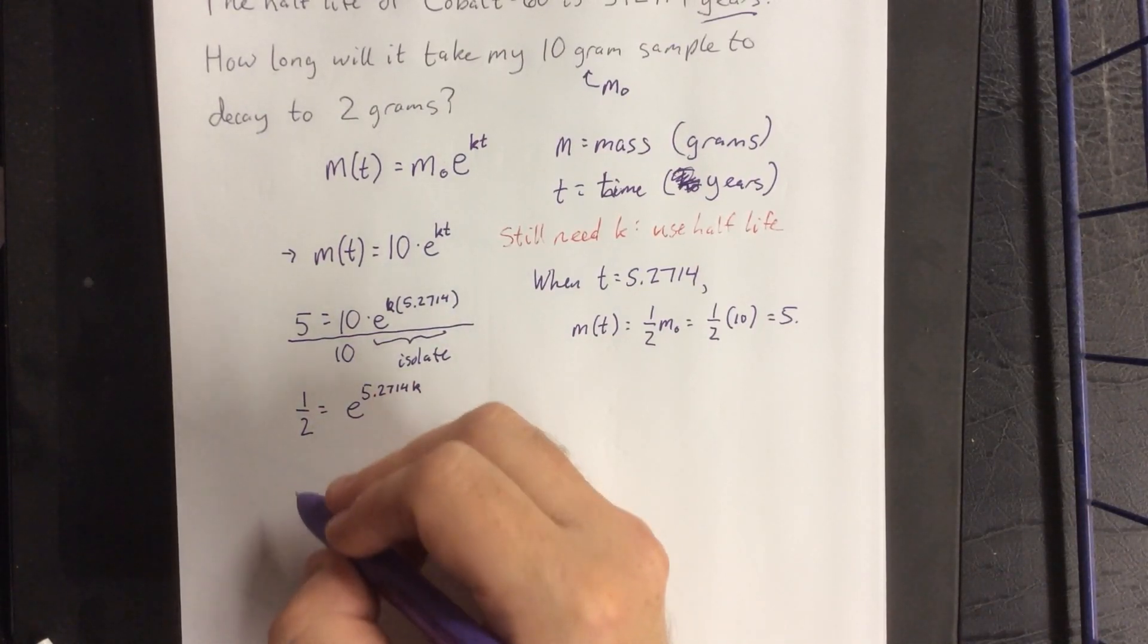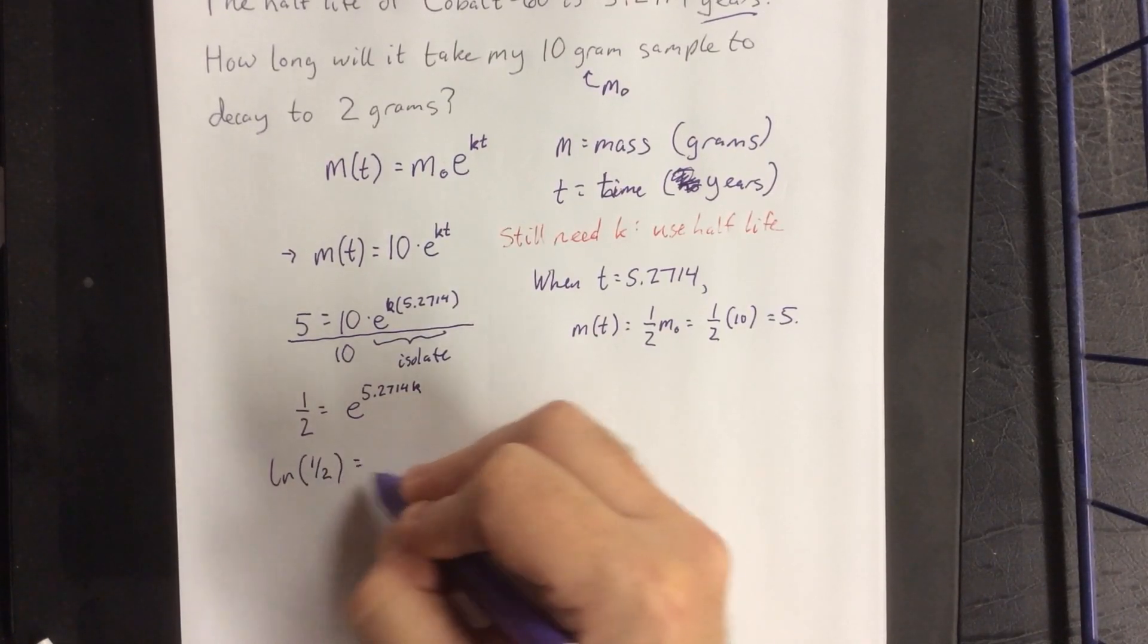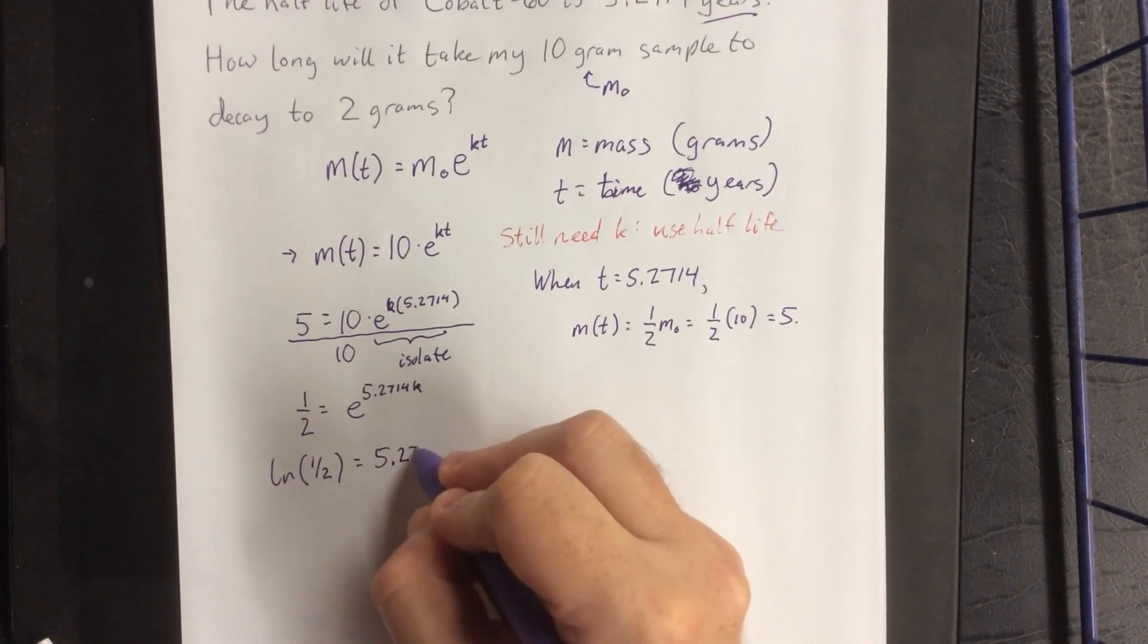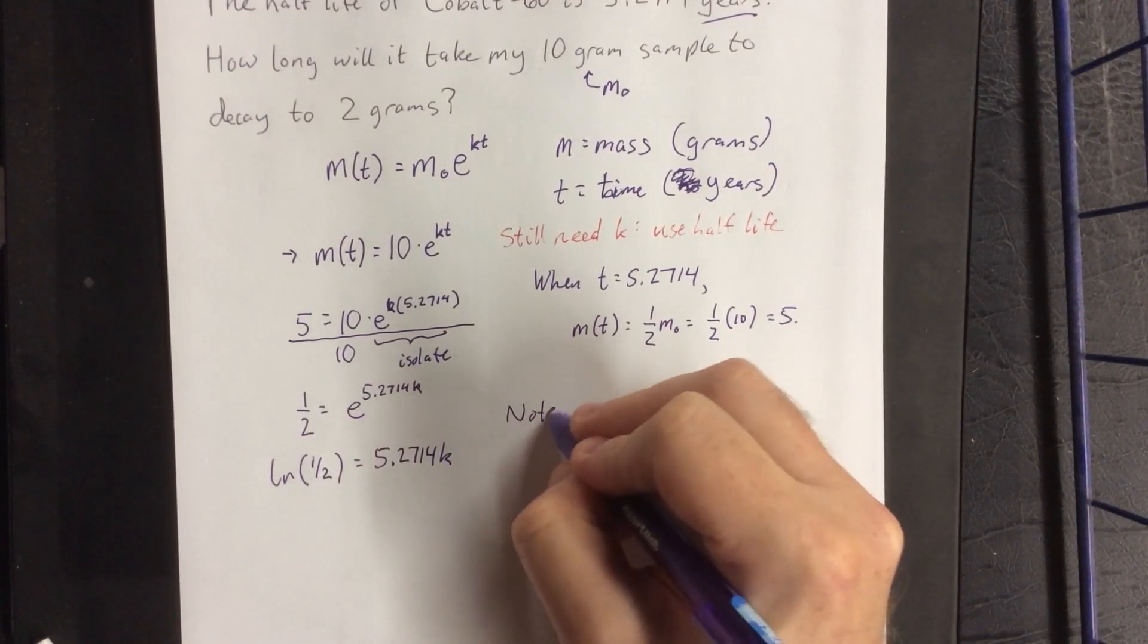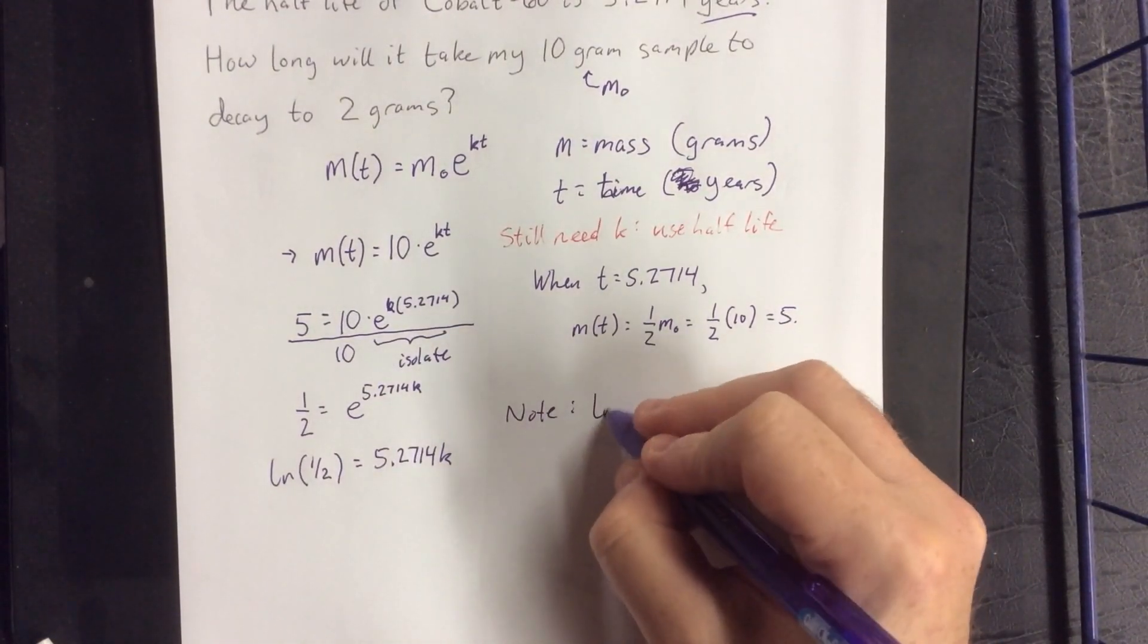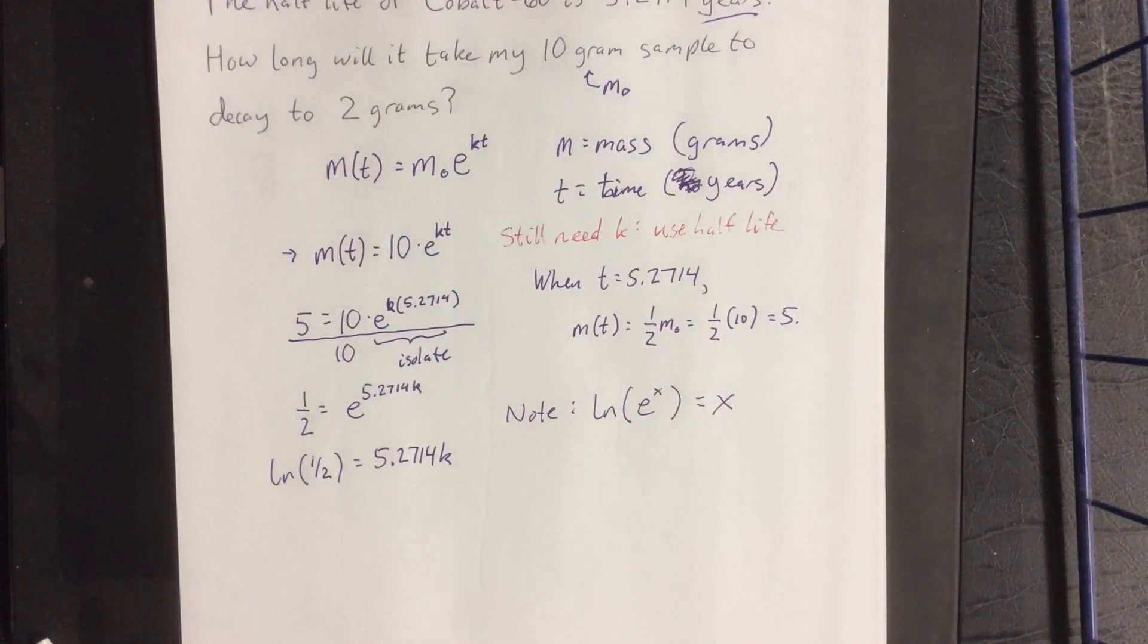So that'll be 1 half is equal to, we'll simplify the exponent to be 5.2714 k, at which point we'll apply a natural log to both sides. So natural log of 1 half is going to be equal to 5.2714 k. And the note to make on this is anytime you take the natural log of e raised to a power, it is simply going to be that power, since natural logs and natural exponentials are inverse functions.